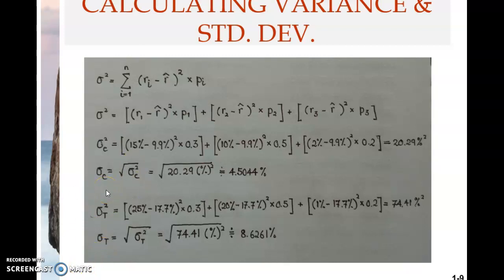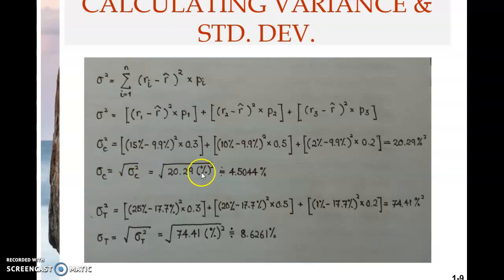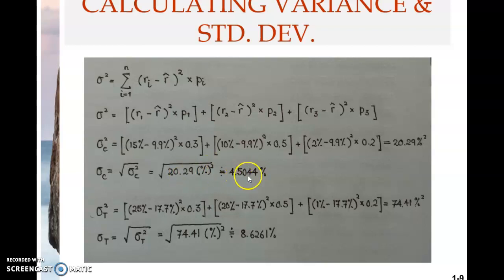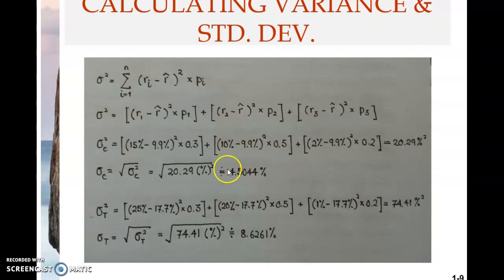Welcome to the third clip on chapter 13. In the previous clip we were looking at the standard deviation of return for stock C. It's just the square root of the variance of returns for stock C. Therefore you take the square root of 20.29 — the variance here, 20.29 remember this is percentage squared — and it becomes 4.4044% to 4 decimal points.